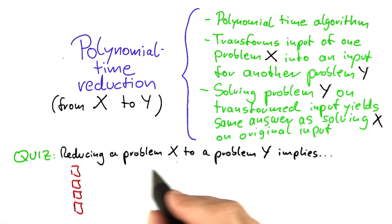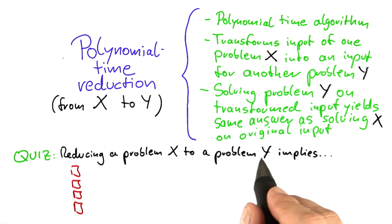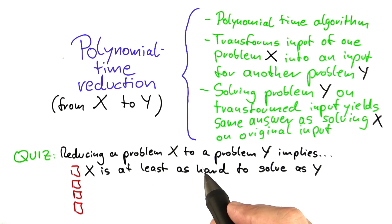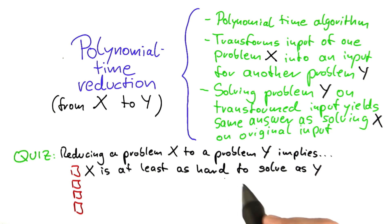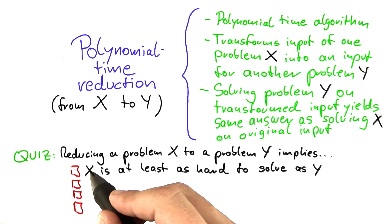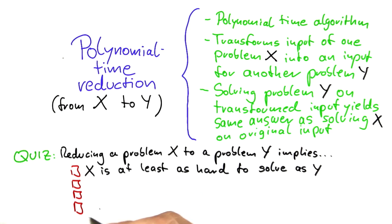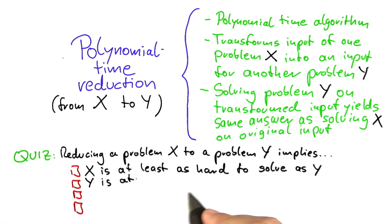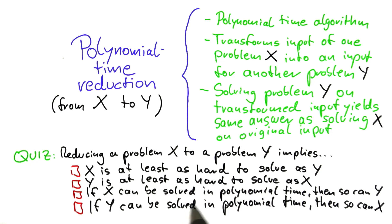I'll give you four choices here. Does reducing a problem x to a problem y imply that x is at least as hard to solve as y? By hardness, I mean the distinction between polynomial time and exponential time — for example, if y is only solvable in exponential time, does that mean that x can only be solved in exponential time as well? Or is it the other way around — does it imply that y is at least as hard to solve as x? Does it mean that if x can be solved in polynomial time, then so can y? Or does it mean that if y can be solved in polynomial time, then so can x? Please check all of the answers here that are correct.